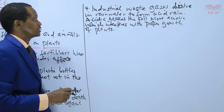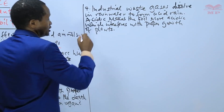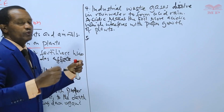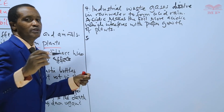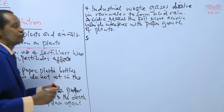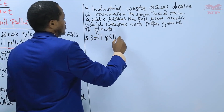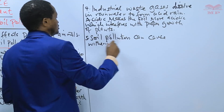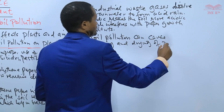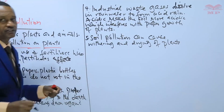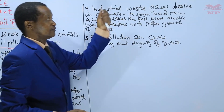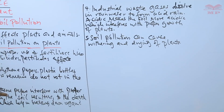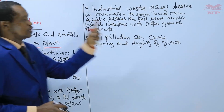That is number four. Number five: soil pollution can cause withering and drying of plants, especially the leaves. The leaves are likely to be affected the most, especially when there is acidic rain. So these are five effects of soil pollution on plants.